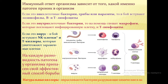С разными видами патогенов борются разные клетки иммунной системы. Для внутриклеточных бактерий спешат на помощь макрофаги и Т-лимфоциты. Если это вирус — привлекаются натуральные киллеры и Т-киллеры. Если внеклеточные бактерии, грибы, паразиты — вступают клетки врождённого иммунитета, такие как эозинофилы, а также Т- и B-лимфоциты. На каждую разновидность патогена у организма припасён свой эффективный способ борьбы.